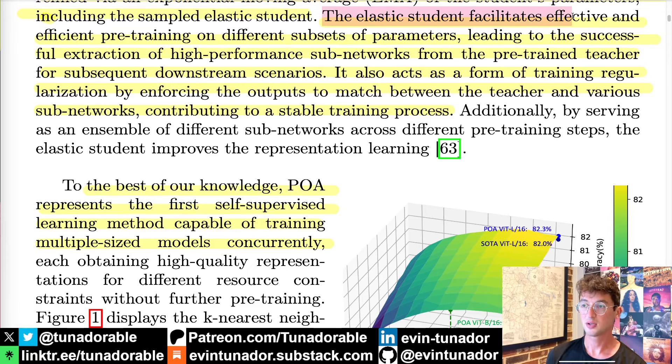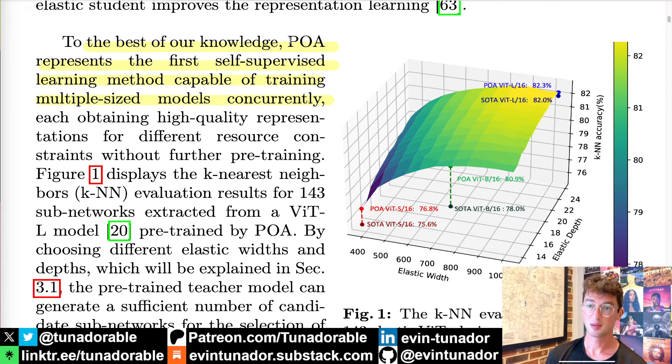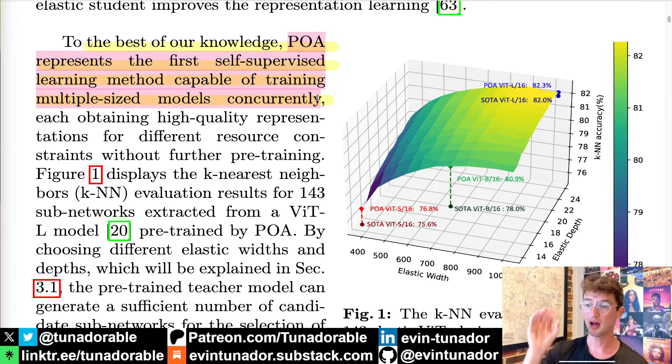The other part of the goal of the elastic student is not just as a regularization technique, but more so to allow for post-hoc during inference the full extraction of high-performance sub-networks from the pre-trained teacher. What they're hoping is that they have only trained a model of one specific size, but despite training one model of one size, they can basically just take subsets of that model, splices of the matrices, and use those as their own models for any use case that might require lower computes, smaller matrices, smaller model size. To the best of their knowledge, they said that POA is the first method capable of training multiple size models concurrently.